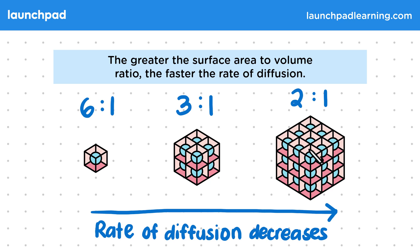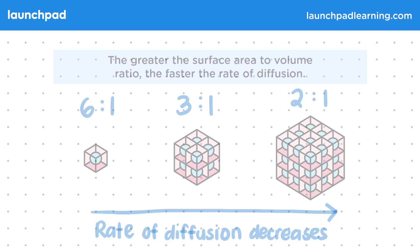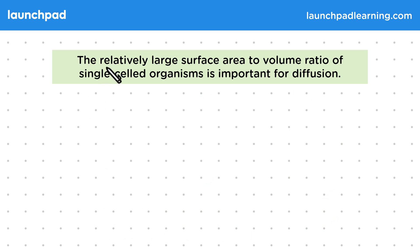Can you have a think about why this relatively large surface area to volume ratio is important for single celled organisms? The relatively large surface area to volume ratio of single celled organisms is important for diffusion.